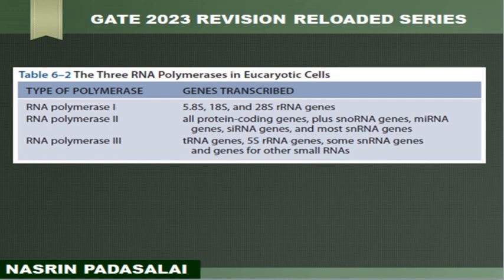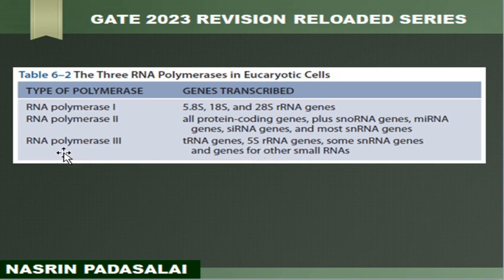Next is RNA pol 2. RNA pol 2 is the enzyme involved in transcribing all of the protein-coding genes, along with small nuclear RNA, micro RNA, small interfering RNA (siRNA), and most of the small nucleolar RNAs — all transcribed by RNA polymerase 2. Next, RNA pol 3 is involved in transcribing tRNA genes and the 5S ribosomal RNA gene. The rest of the ribosomal RNA genes are transcribed by RNA pol 1; only the 5S ribosomal RNA gene is transcribed by RNA pol 3.